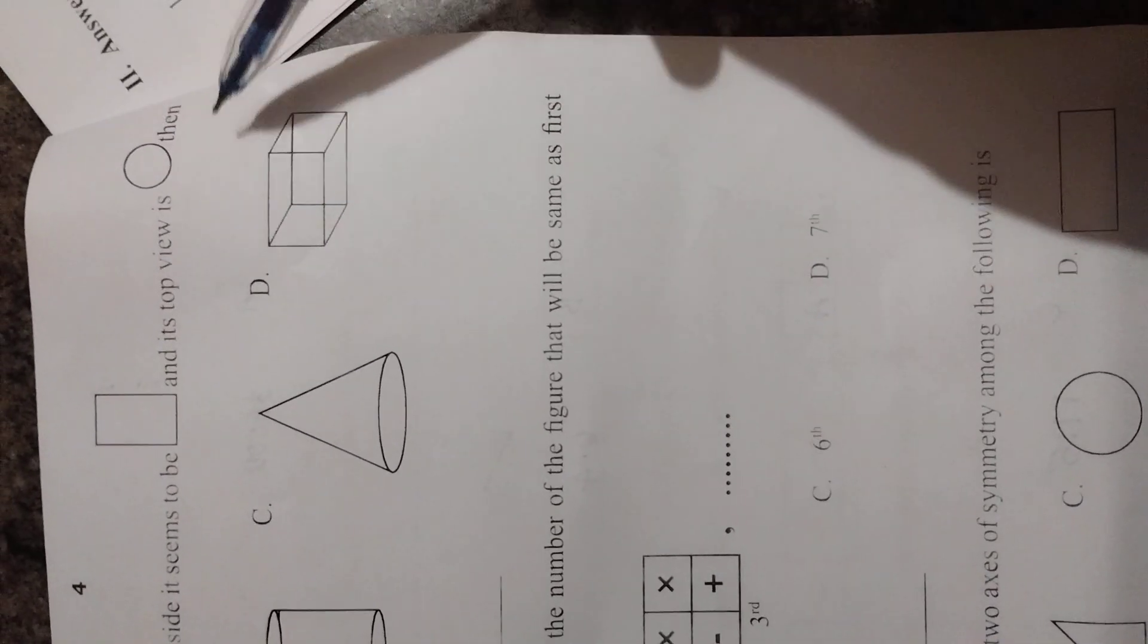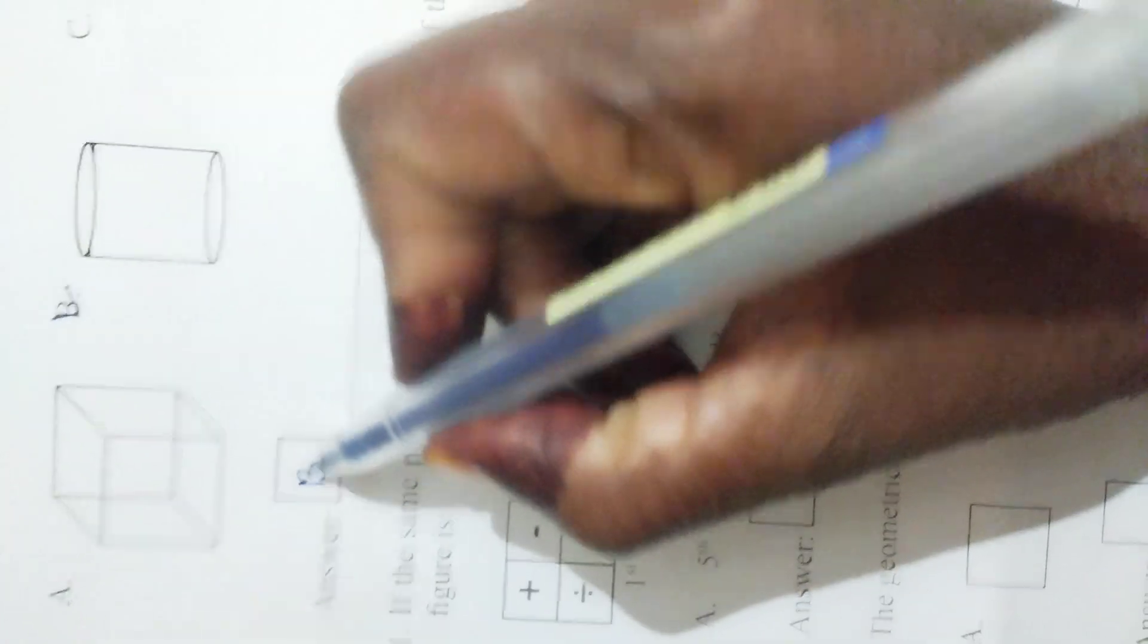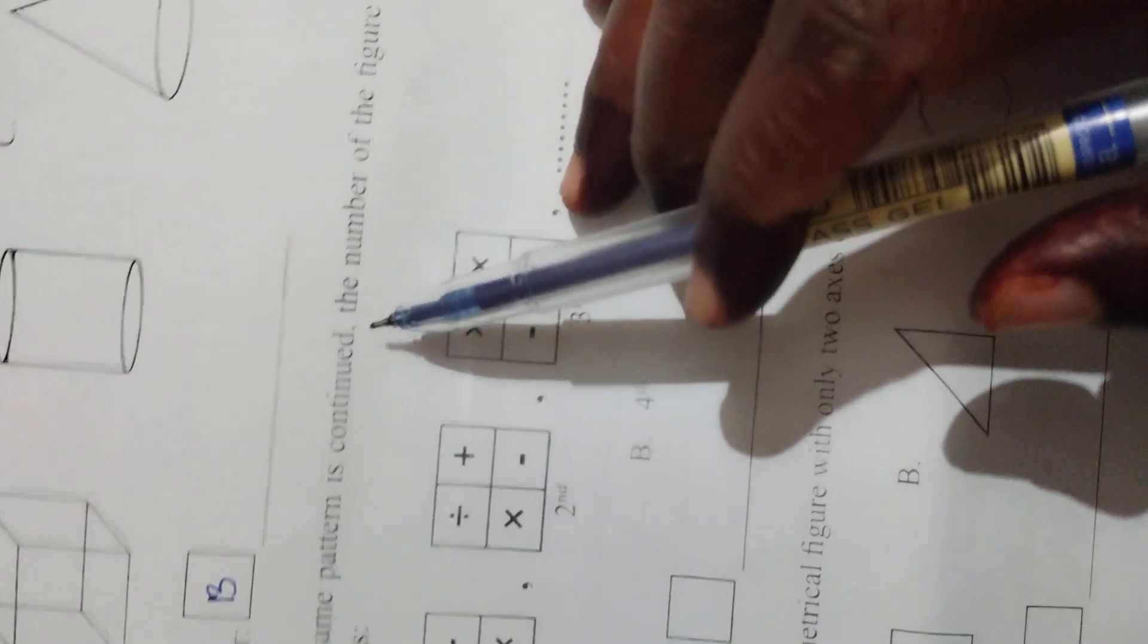Here we have a solid object. When viewed from the side it seems to be like a rectangle and its top view is a circle. Then the solid X - side shape is rectangle, top view is circle - that is the cylinder. B is the correct answer, you can write here B.